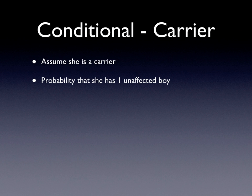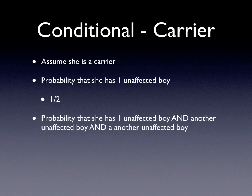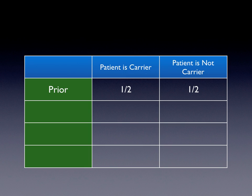What is the probability that she has one unaffected boy if she is a carrier? It's one-half — she either passes the gene on or she doesn't, because it's X-linked recessive. She either gives that boy the X chromosome with the defective gene, or she doesn't. Fifty percent. She has one unaffected boy, and another, and another. When you see 'and,' that's your cue to multiply. So we take one-half times one-half times one-half, and we end up with one-eighth. In our table, conditional for carrier is one-eighth.